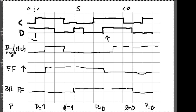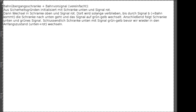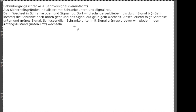Dann lassen wir Impulsdiagramme und Flipflops hinter uns und schauen uns an, was eigentlich passiert, wenn ich eine Textaufgabe habe – ähnlich wie in 10-3 und 10-2. Wir haben eine Textaufgabe, die uns ein Programm beschreibt. Wir müssen nicht unbedingt viel verstehen, warum es das tut, aber wir müssen aus dem Text rauslesen können, was es tut. Das Ziel ist, daraus ein Zustandsdiagramm zu machen.